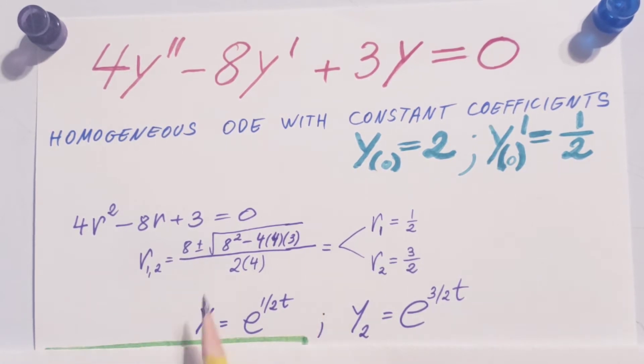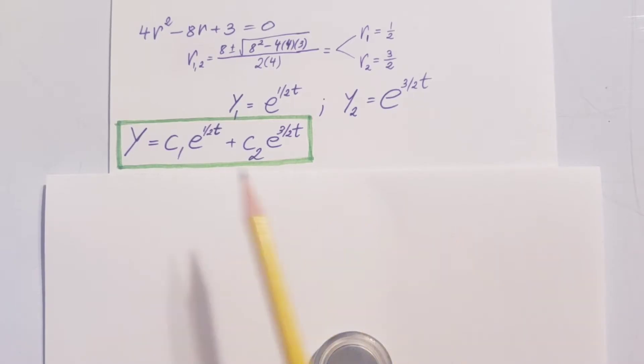In this case, we know these will be our two solutions for it: e to 1/2 t and the second one e to 3/2 times t. Our solution, c1 e to the 1/2 t plus c2 e to the 3/2 times t.